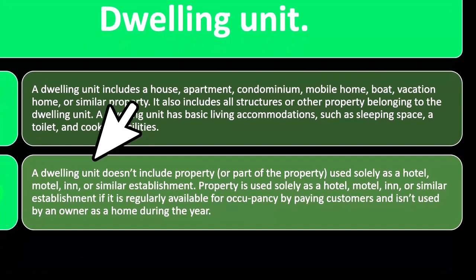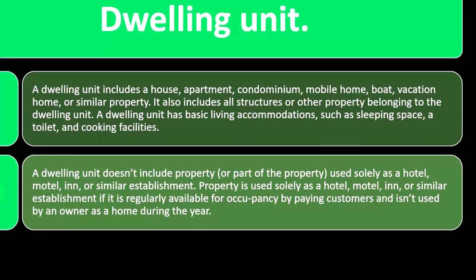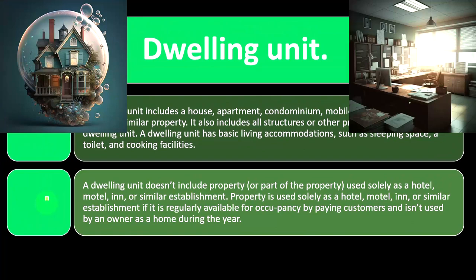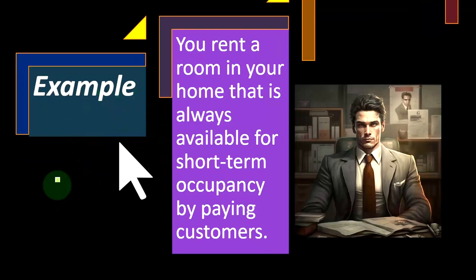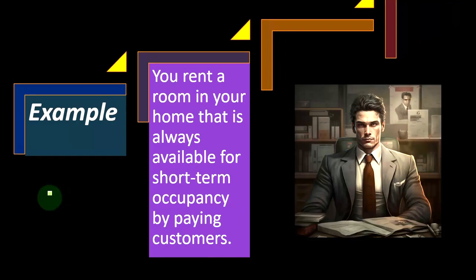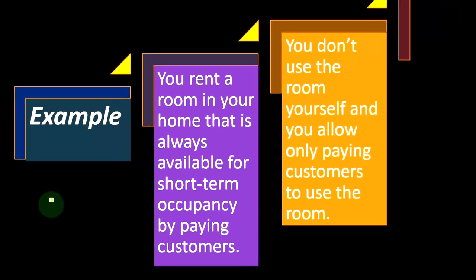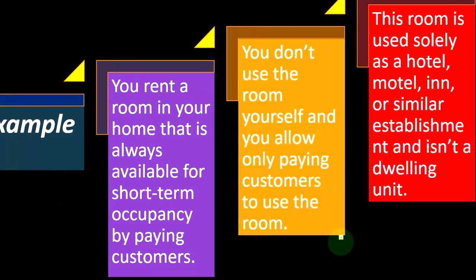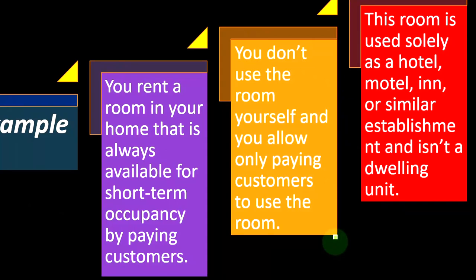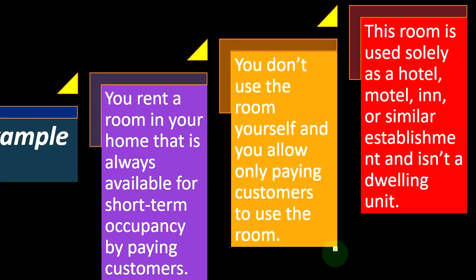A dwelling unit doesn't include property used solely as a hotel, motel, inn, or similar establishment — that is, if it is regularly available for occupancy by paying customers and isn't used by the owner as a home during the year. For example, if you rent a room in your home that is always available for short-term occupancy by paying customers, you don't use the room yourself, and you allow only paying customers to use it, then the room is used solely as a hotel or similar establishment and isn't a dwelling unit.